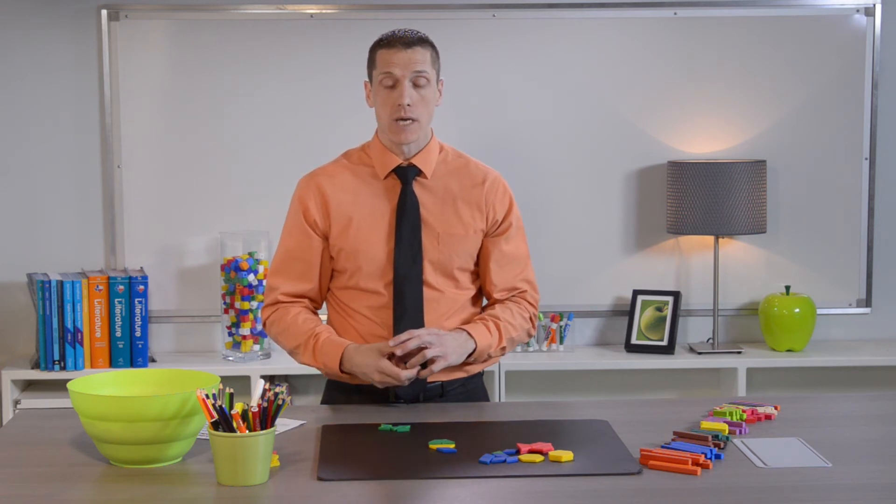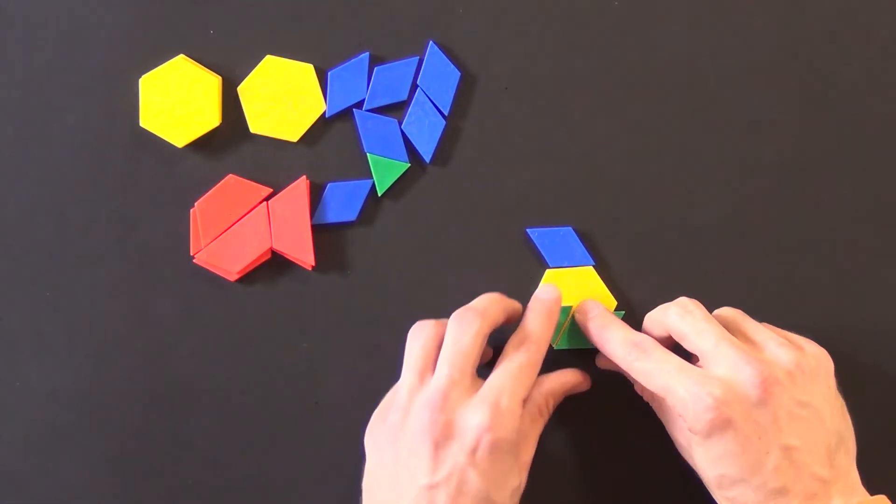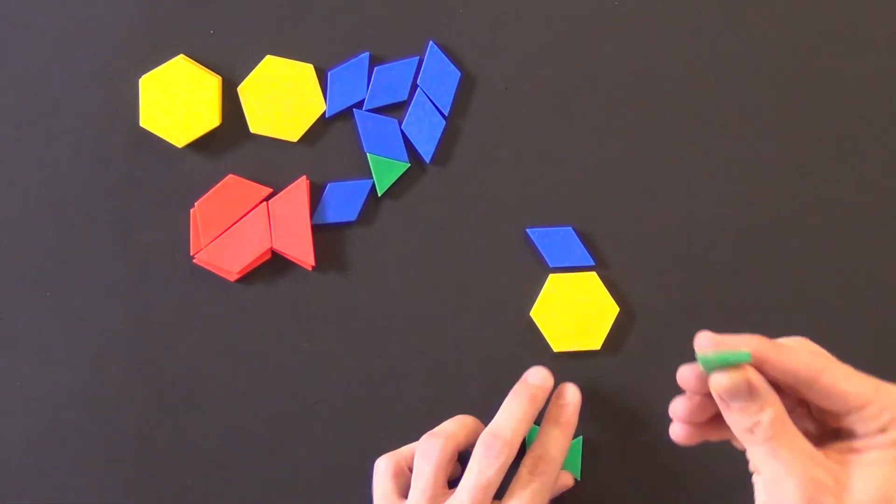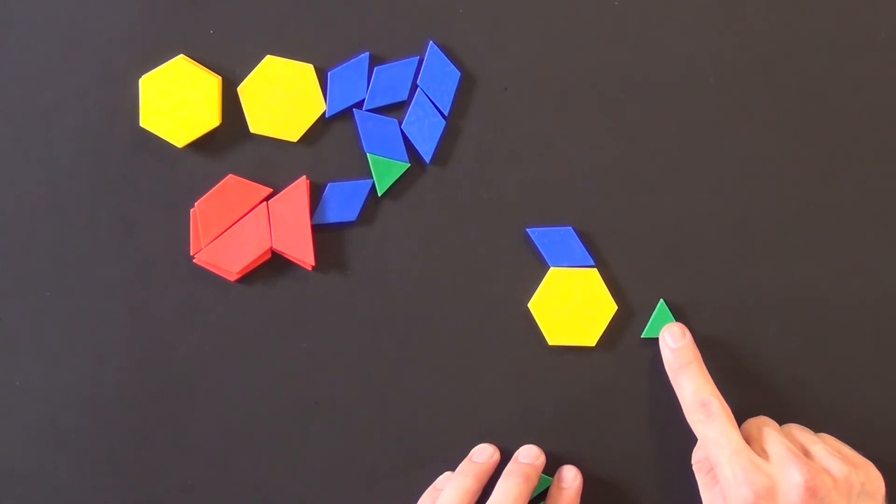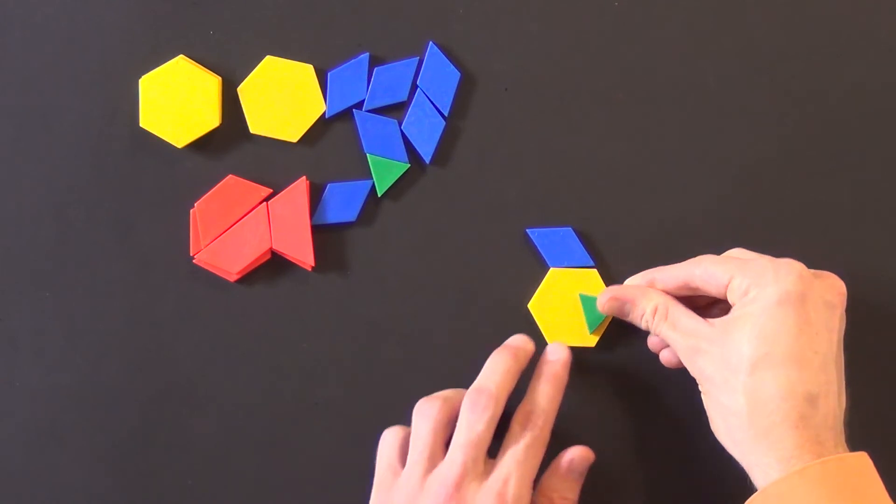Represents how many times we partitioned the whole into equal-sized parts. The denominator names the size of the piece. So the green triangle, this is an eighth. This is an eighth. That's what it is. That's its name.